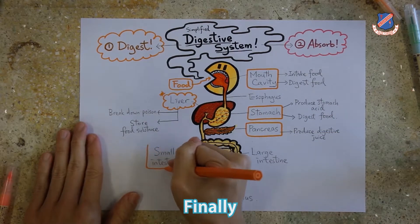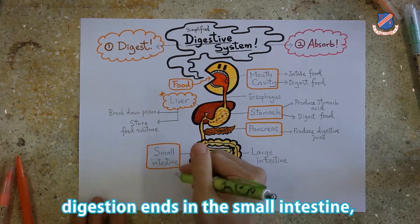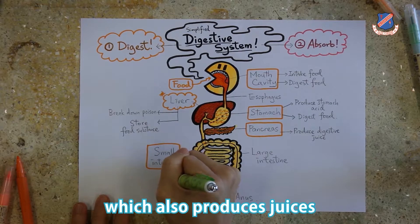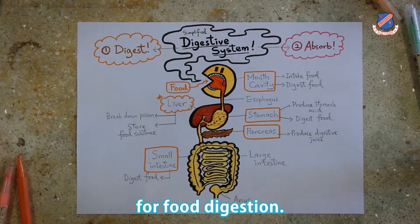Finally, digestion ends in the small intestine, which also produces juices for food digestion.